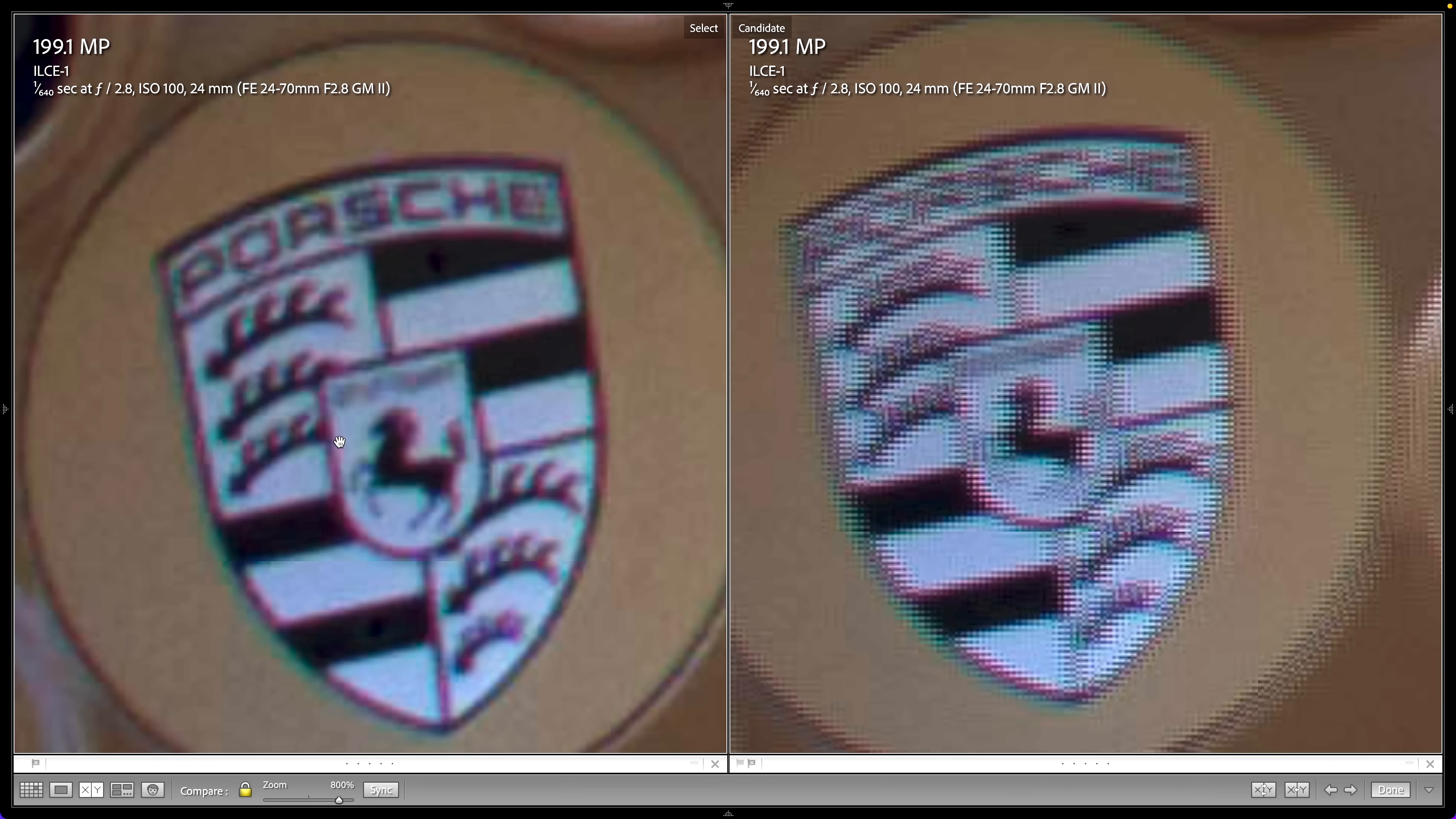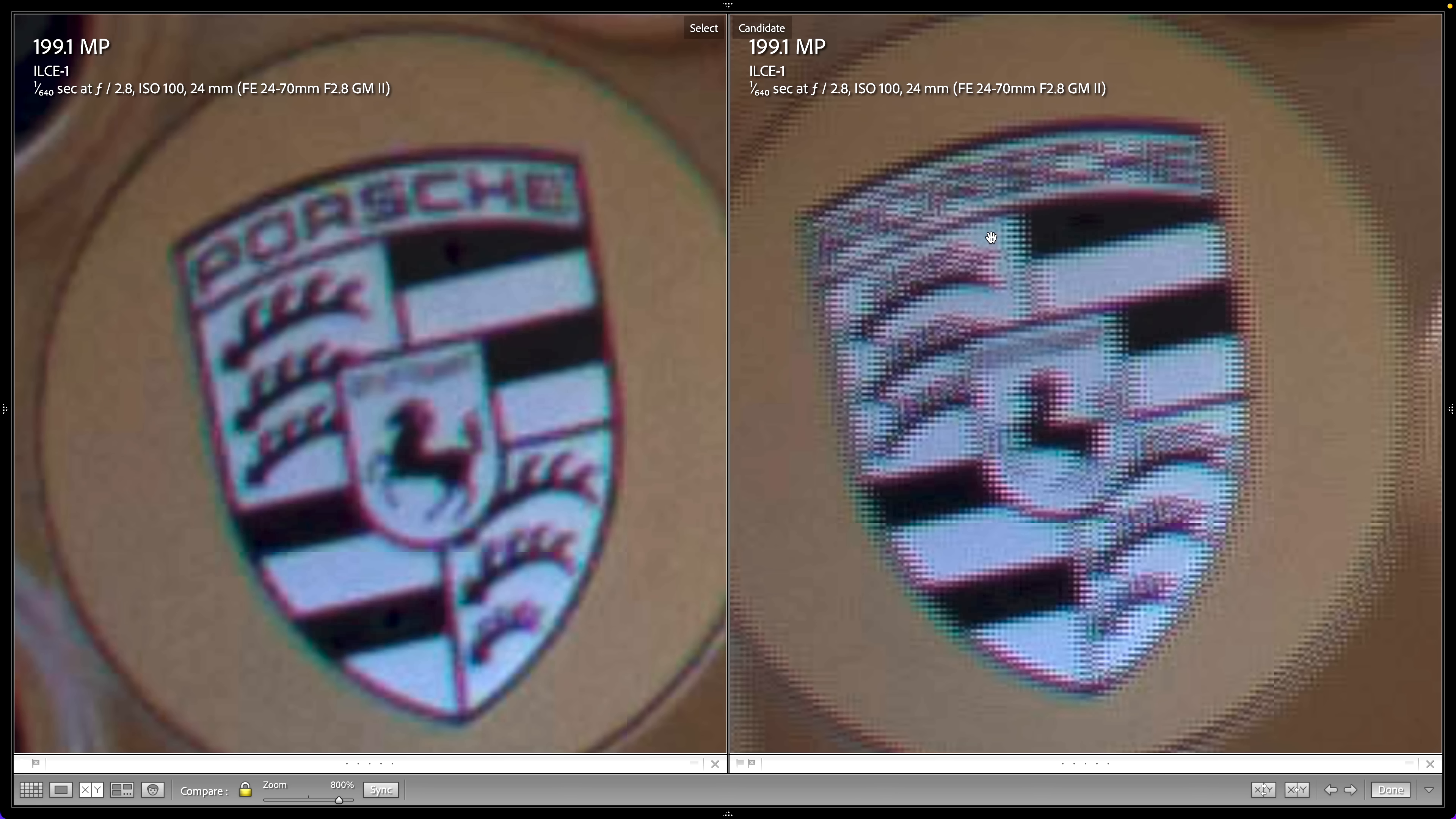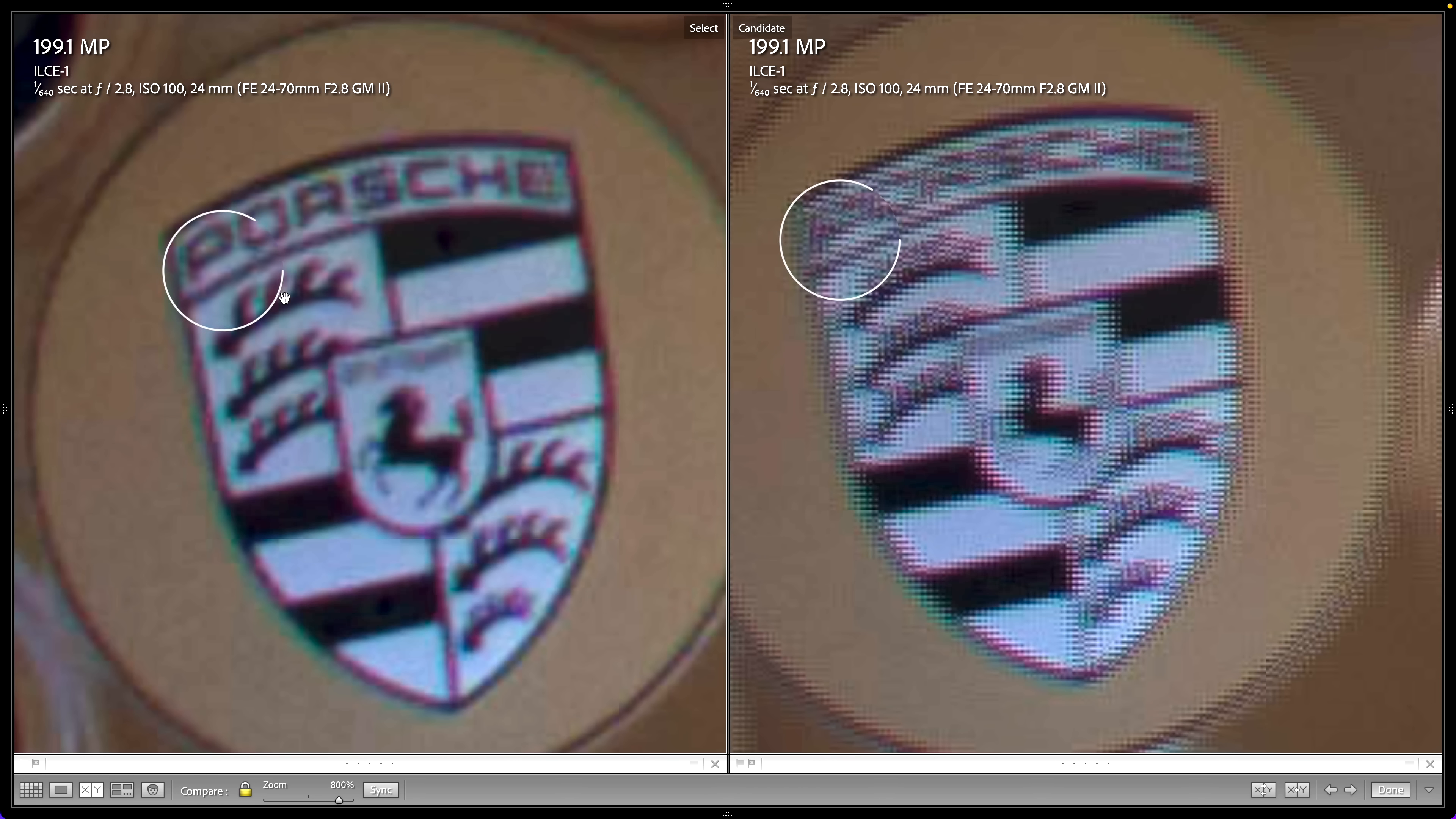On the left we see the result when processing the same Sony files with the cancel movement option selected and on the right we see what happens if you don't select that. The car was not moving. The earth was moving a little bit. And that meant the Sony could not combine the individual images in an effective way. The Sony software detects this and uses the detail from only a single image.